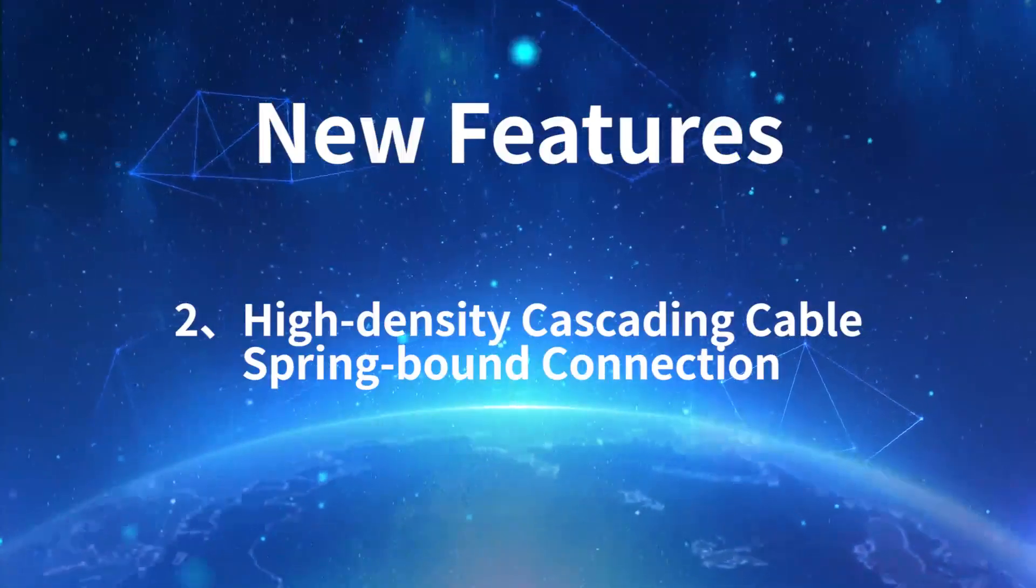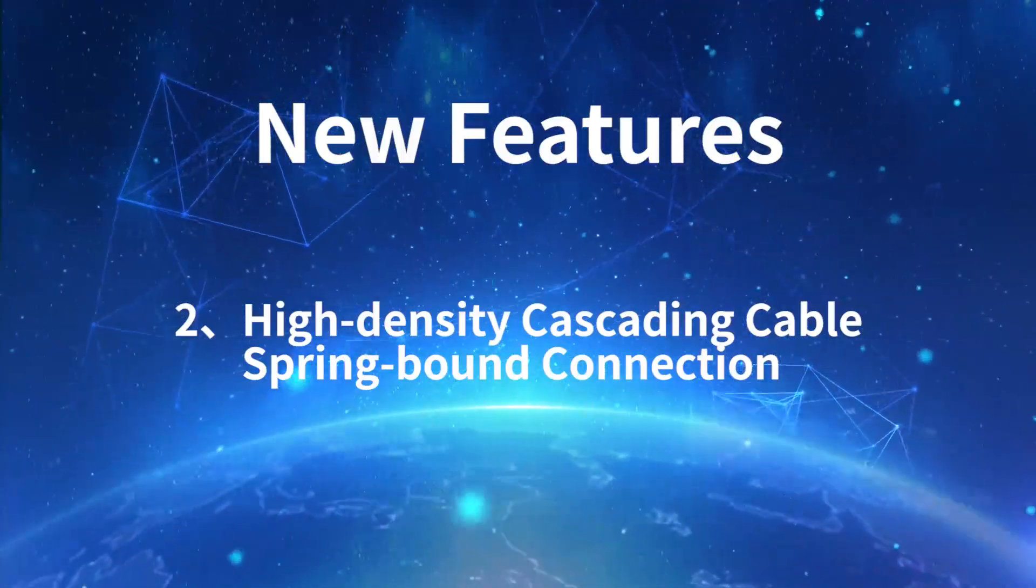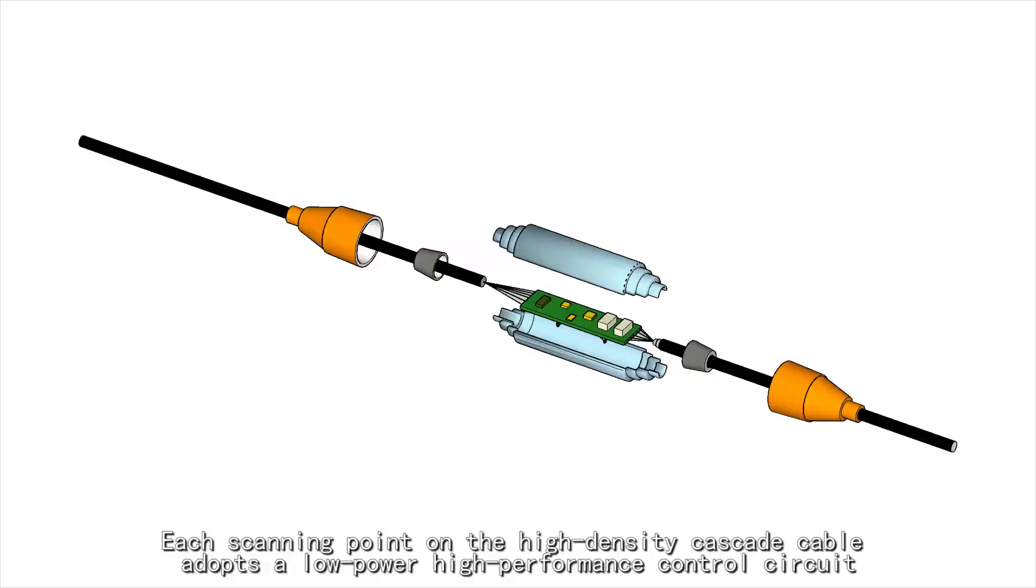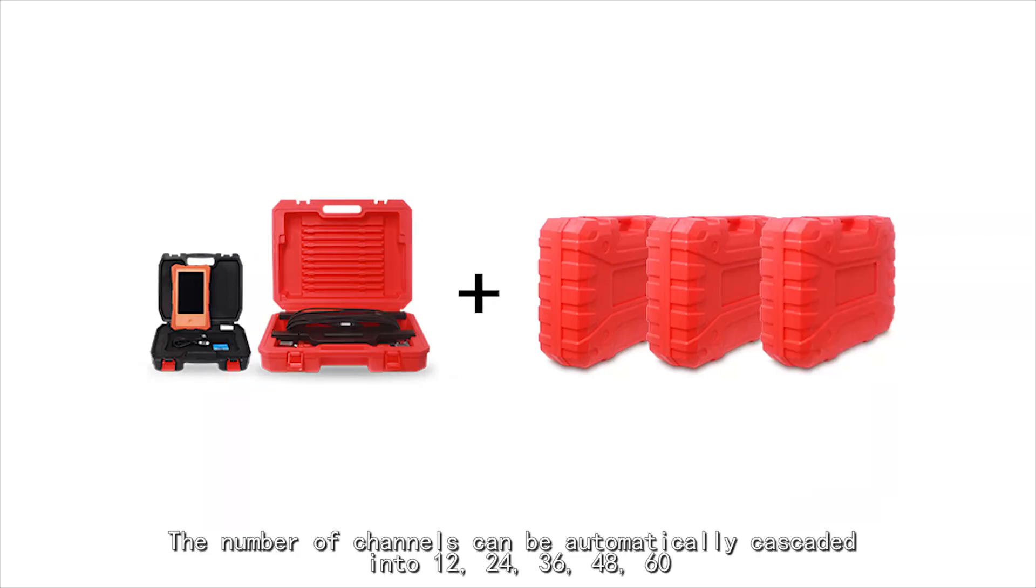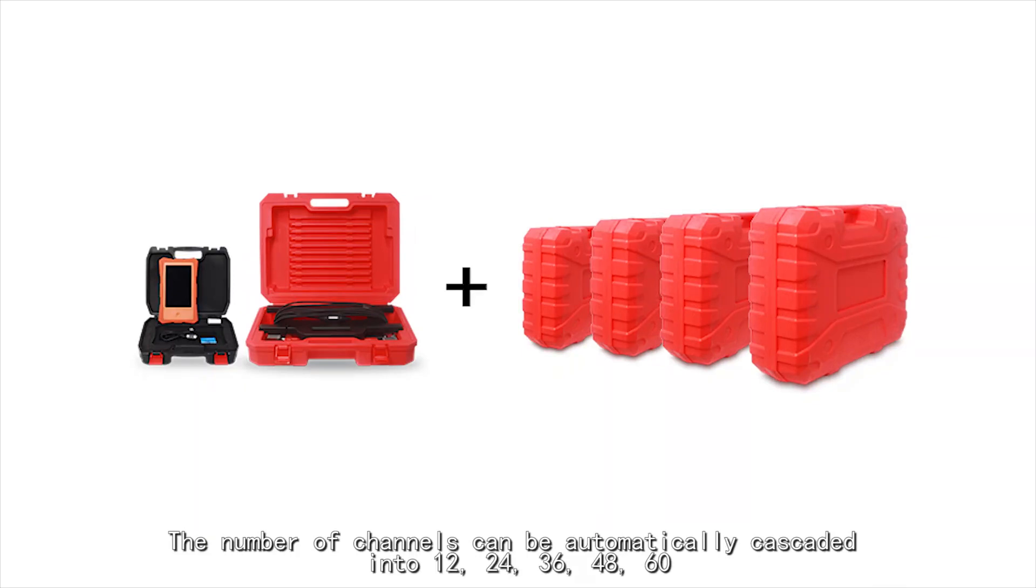Feature 2: High-Density Cascading Cable Spring-Bound Connection. Each scanning point on the high-density cascade cable adopts a low-power high-performance control circuit. The number of channels can be automatically cascaded into 12, 24, 36, 48, or 60 channels.